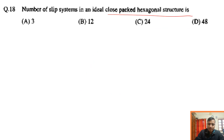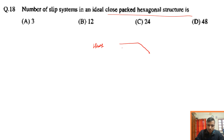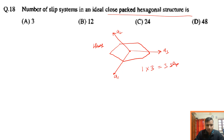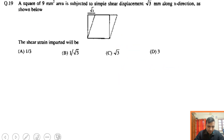The next question asks for the number of slip systems in an ideal close-packed hexagonal (HCP) structure. HCP has the basal plane as the slip plane. In that plane, there are three slip directions: a1, a2, and a3. So we have one plane and three directions, giving three slip systems. The correct answer is option A.